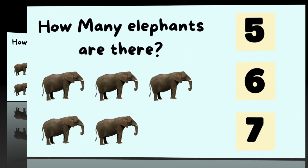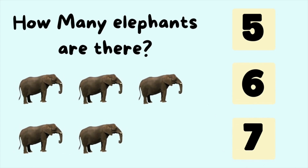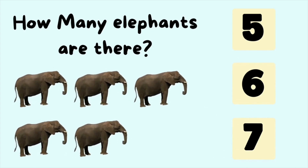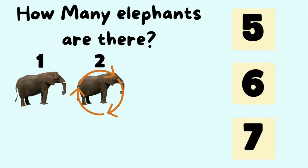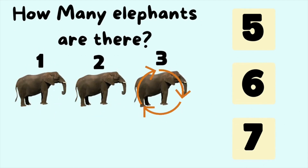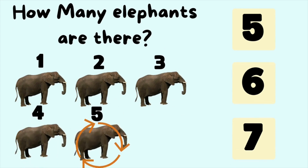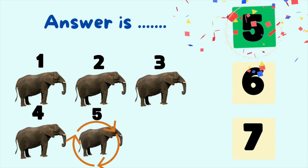How many elephants are there? Let's count the number of elephants. It is one, two, three, four, five elephants. So the answer is five elephants.